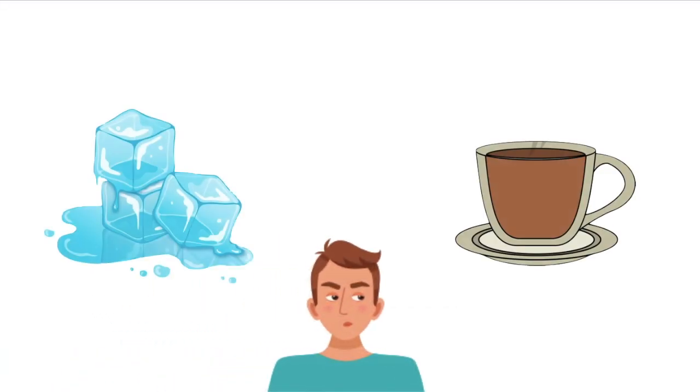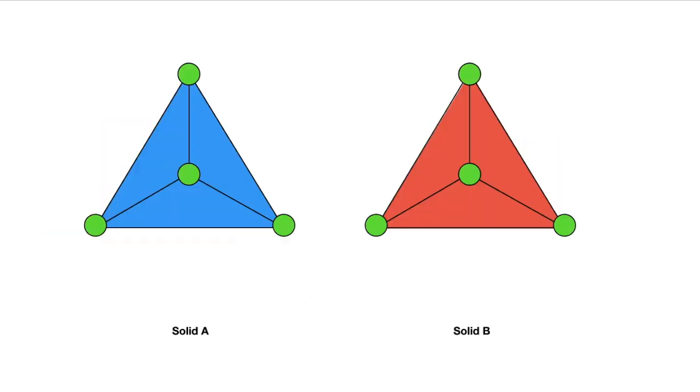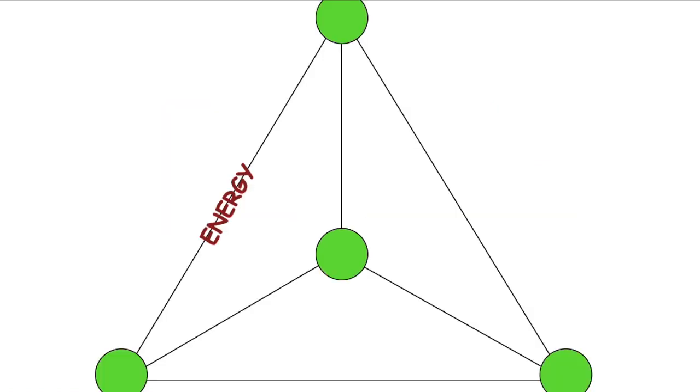Just think about physical phenomena: melting of ice, cooling down of a mug of coffee. Why does it actually happen? To understand this let's consider two solids, solid A and solid B. Both are tetrahedral in structure having six bonds each. The energy of the body resides inside the bonds between the two atoms.